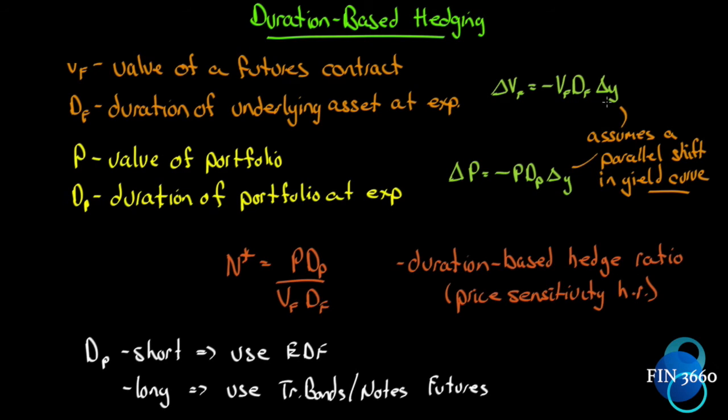All we're doing is taking a big portfolio that we have and hedging it out with a small portfolio based on the value of the futures contract. Now the important thing here: notice that these delta Y's cancel out in both of these. It assumes a parallel shift in the yield curve. That's not always true—anyone who's had a fixed income course knows that—but it's a good place to start.